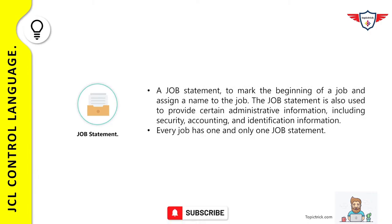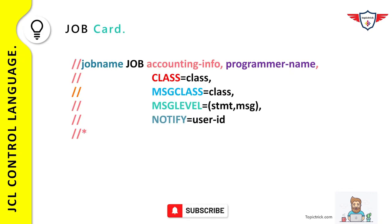The first job control statement is the job card. A job statement is the first statement of any JCL — it marks the beginning of a job and assigns a name to it. It provides administrative information including security, accounting, and identification information. A JCL can have one and only one job card. The syntax is straightforward: the identifier is two forward slashes, followed by the job name (required, maximum eight characters), a space, the operation field JOB, and then the parameters.